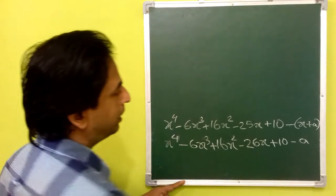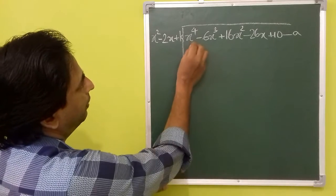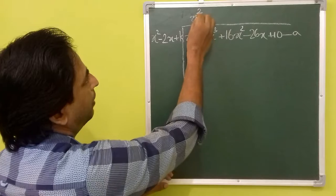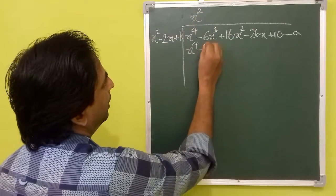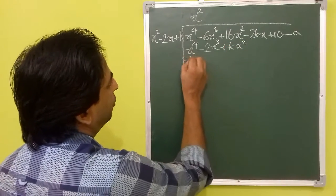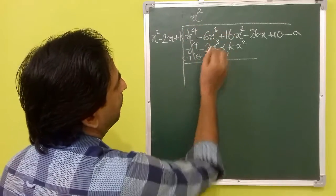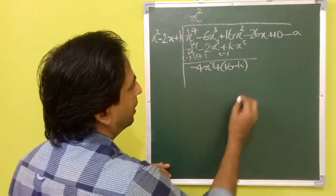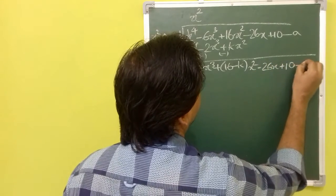Now, we can divide this polynomial by the divisor and whatever you get as a remainder, you can equate it to 0. Now, you can divide the term with the highest power in the dividend by the term with the highest power in the divisor. So, that will give you x raised to 4 by x squared is x squared. And you can multiply each term in the divisor by this. You will get x squared into x squared is x to the 4th. x squared into minus 2x is minus 2x cubed. x squared into k is kx squared. Now, you will change the signs of everything and add. You will get 0 minus 6 plus 2 is minus 4x cubed, plus 16 minus k in brackets, 16 minus k squared. Now, you can bring all these terms down: minus 26x plus 10 minus k.